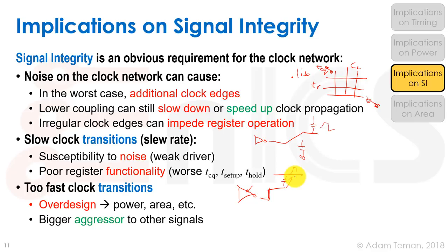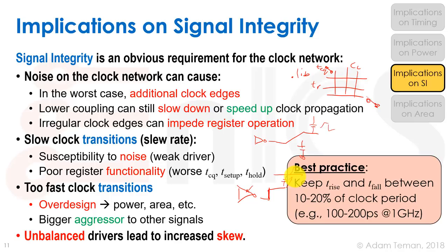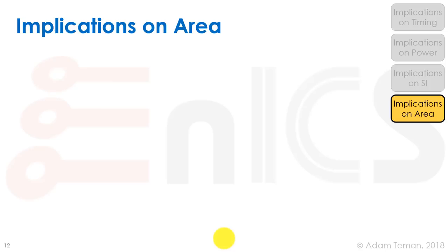Best practice is to keep T_rise and T_fall between 10–20% of the clock period — about 100–200 picoseconds at 1 GHz. Standard cell clock elements are balanced so T_PLH ≈ T_PHL and T_rise ≈ T_fall at the output, which helps keep skew lower.